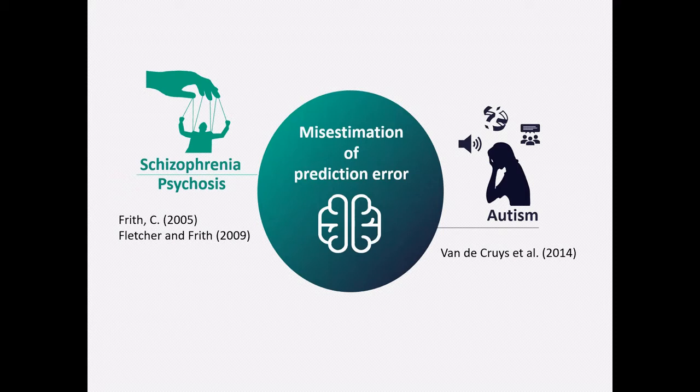These authors do not discuss surprise threshold, but instead argue that excessive surprise occurs because of misestimation of prediction error. In other words, if people consistently misjudge the precision of their memory or their sensory data, they end up getting more surprised than they should be.